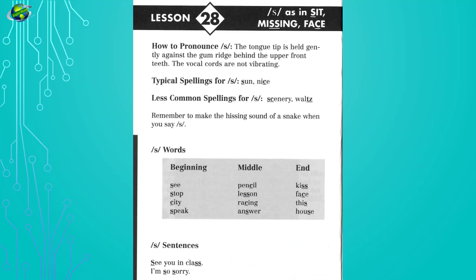Lesson 28: S as in sit, missing, face. Listen and repeat. See, stop, city, speak, pencil, lesson.